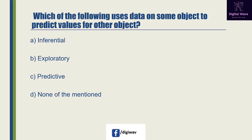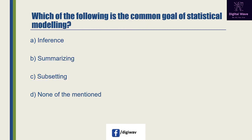Next question: which of the following uses data on some object to predict values for other objects? Option A is 'inferential', option B is 'exploratory', option C is 'predictive', and the last option is none of the mentioned. The right answer will be C, because a prediction is a forecast, but not only about the weather.